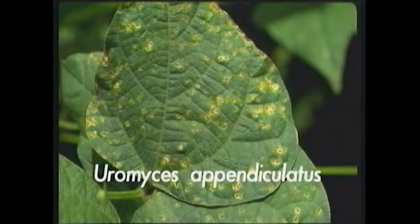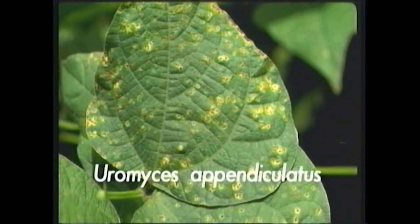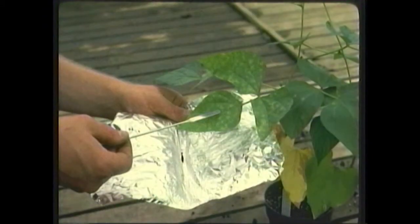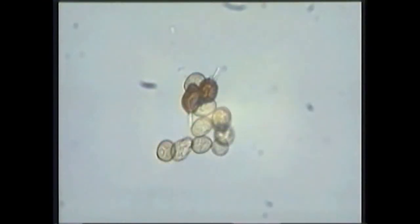Bean rust is caused by Uromyces appendiculatus, and the pathogen only infects beans. The organism can be recovered from plant parts, and spore stages such as urediniospores and teliospores can be observed microscopically.